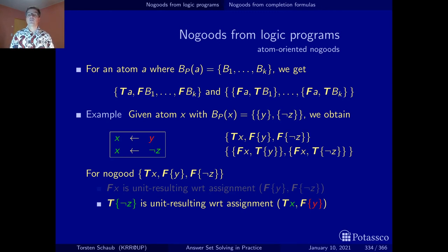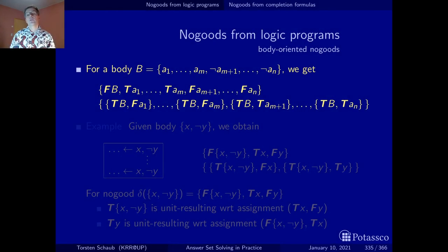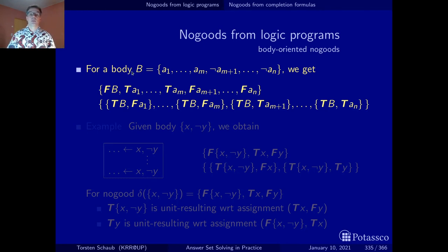Now that we did this for the atom-oriented no-goods, let's look at how this works for body-oriented no-goods. Recall that the purpose of body-oriented no-goods is to link the truth value of the auxiliary variable representing the body with the actual body literals. So if we have a body that contains n body literals, we get n+1 no-goods. The first one says it cannot be the case that the body is false but all body literals have been found to be true.